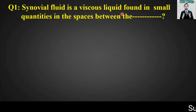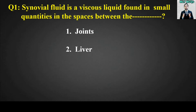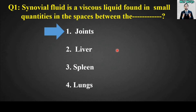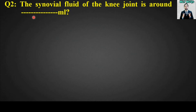MCQ number one: Synovial fluid is a viscous liquid found in small quantities in the spaces between the blank. Options are: joints, liver, spleen, or lungs. The right answer for this MCQ is option number one — joints.